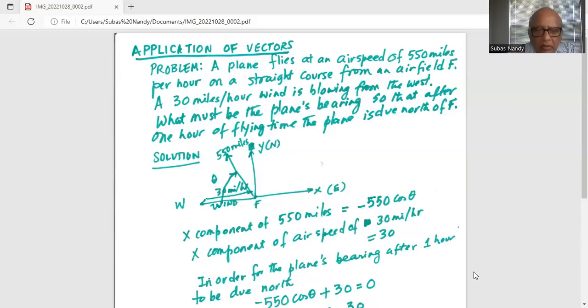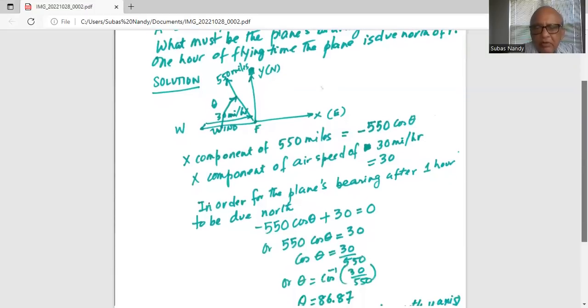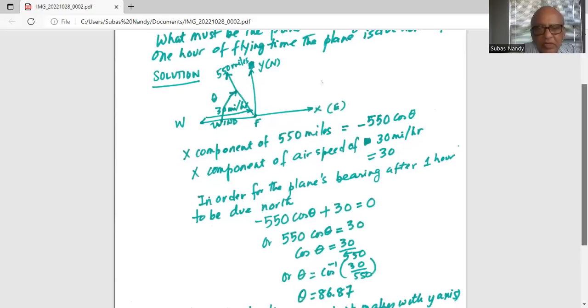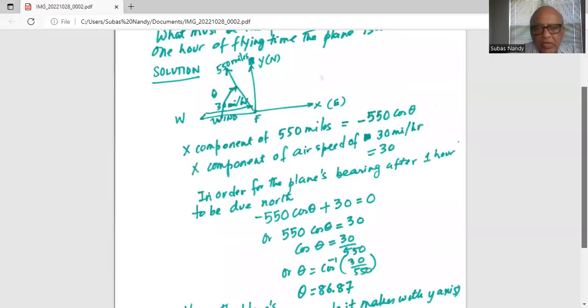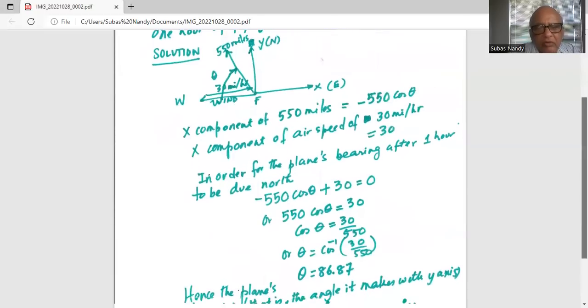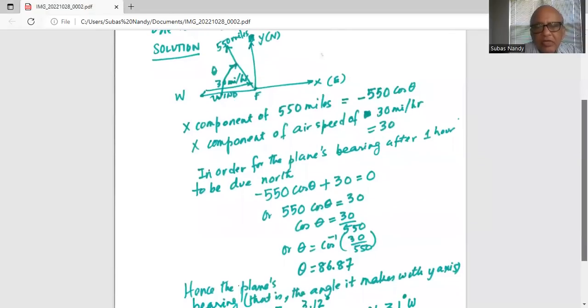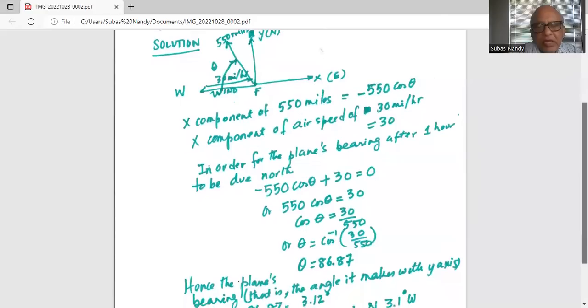So in order for the plane's bearing after one hour to be due north, minus 550 cosine theta plus 30 should be equal to zero. So 550 cosine theta is equal to 30. So cosine theta is equal to 30 divided by 550. So theta is cosine inverse 30 divided by 550, which works out to be 86.87.